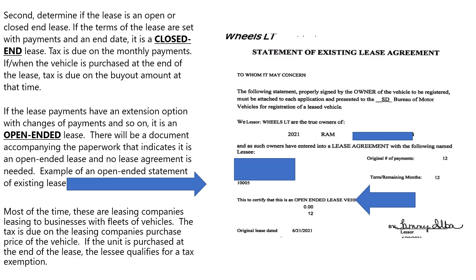Second, determine if the lease is an open-end or closed-end lease. If the terms of a lease are set with payments and an end date, it is considered a closed-end lease, and tax is due on the monthly payments. If and when the vehicle is purchased at the end of the lease, tax is due on the buyout amount at that time. If the lease payments have an extension option with changes of payments and so on, it is considered an open-ended lease, and there will be a document accompanying the paperwork indicating it is an open-end lease — no lease agreement is needed.